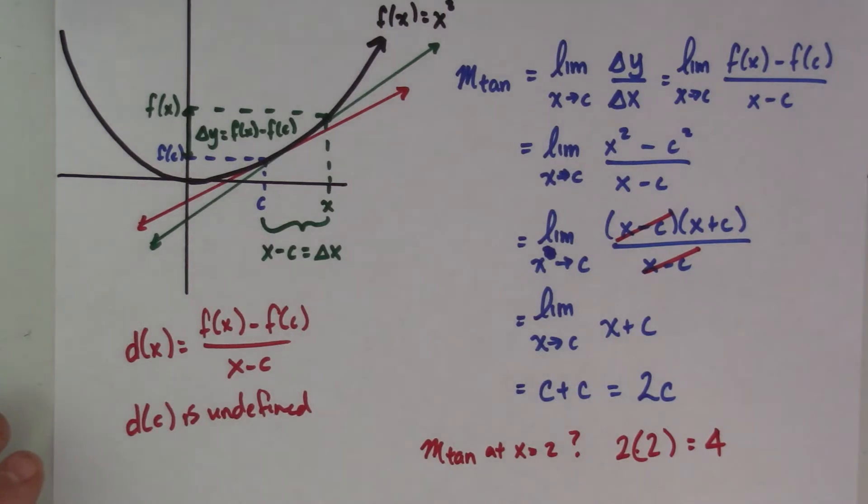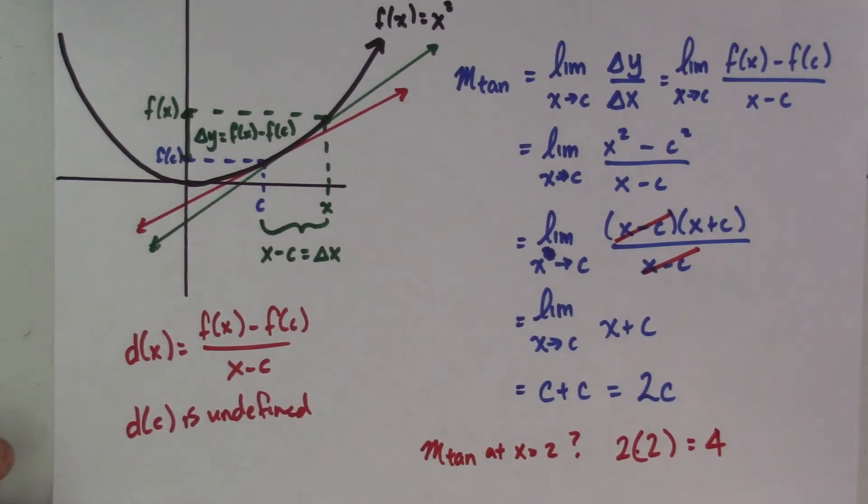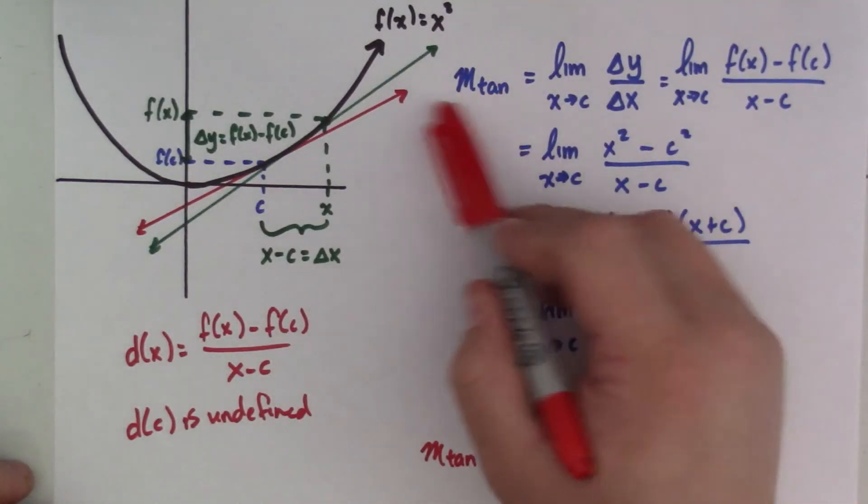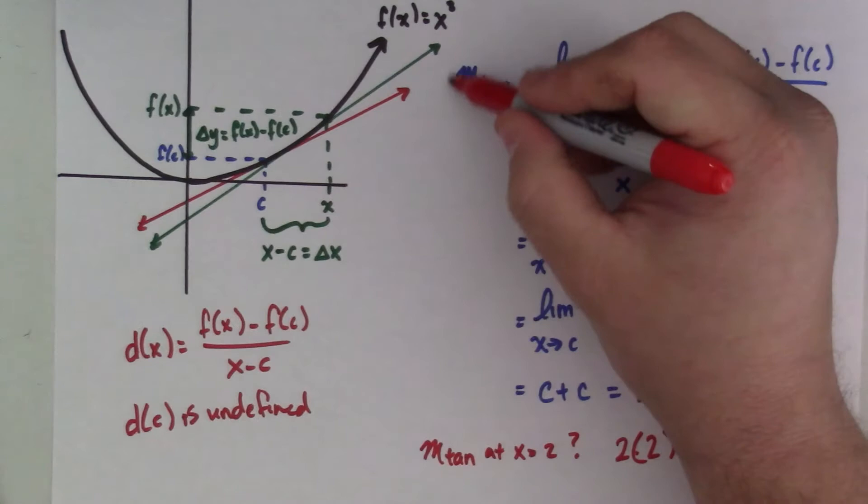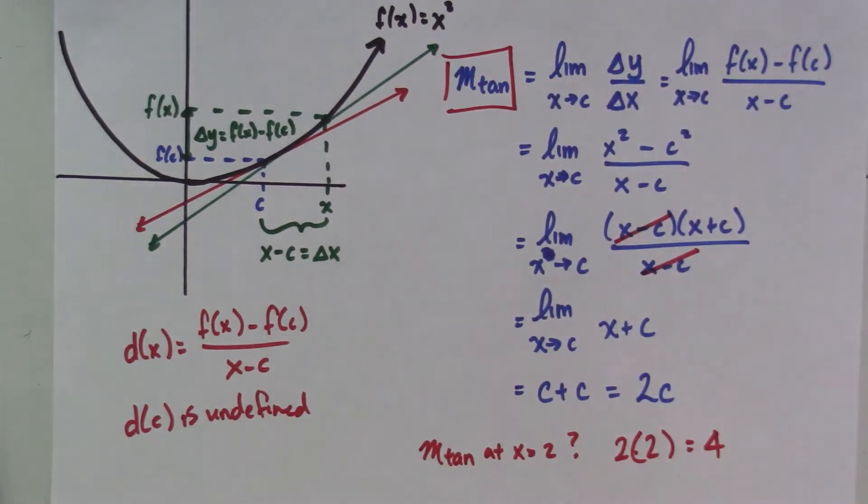Now, there's one last thing I want to talk about before we conclude this video, and that's the idea of how do we write, instead of slope tangent line, there is an official notation for the derivative. And it actually really arises from this statement right here.